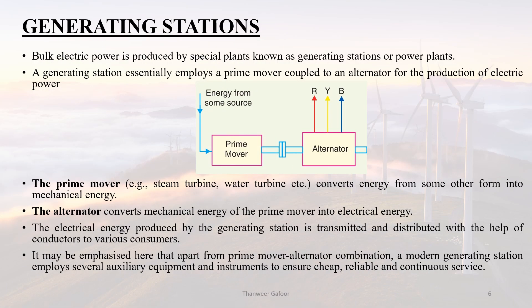What is a generating station? Bulk electrical power is produced in special plants called generating stations, also known as power plants. In a generating station there is a prime mover and an alternator. The alternator is an electricity generator — a bulk electricity generator producing high voltage. The prime mover, such as a steam turbine or water turbine, converts energy from some other form into mechanical energy. The alternator then converts the mechanical energy of the prime mover into electrical energy.